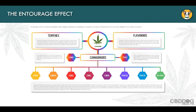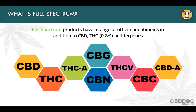All of these compounds together work to create something called the entourage effect — the proposed mechanism of action explaining why the whole plant works better than an isolated compound. Specific molecules might exert a specific effect, but when you try to isolate them they just don't seem to work as well as they did in a full-spectrum extract. For this reason, current research says to use a full-spectrum extract, taking all of the active compounds out of the plant and putting them into something the pet or person can use.